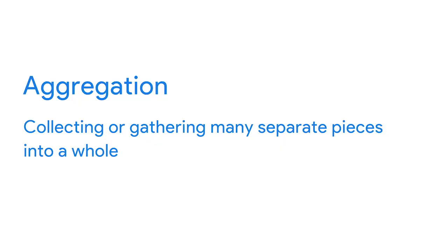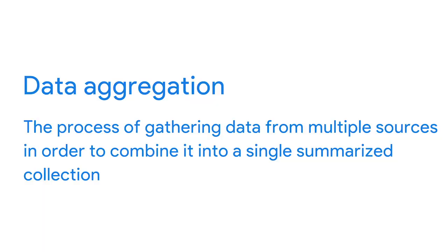Welcome back. In the next few videos, we'll explore something called data aggregation. Aggregation means collecting or gathering many separate pieces into a whole. For example, the Milky Way galaxy is an aggregation of stars, dust, and gases. So data aggregation is the process of gathering data from multiple sources in order to combine it into a single summarized collection.